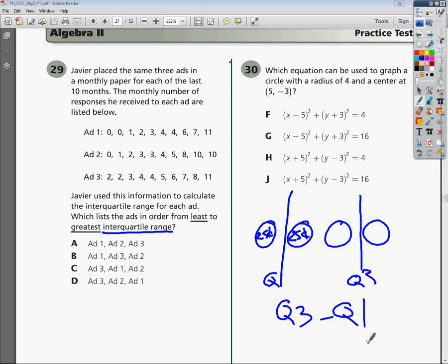I need to split up the data at the halfway point. For ad one, I have one, two, three, four, five, six, seven, eight, nine, ten. There's ten, so after five would be the midpoint. This is the halfway point. Same here at five for ad two and ad three.